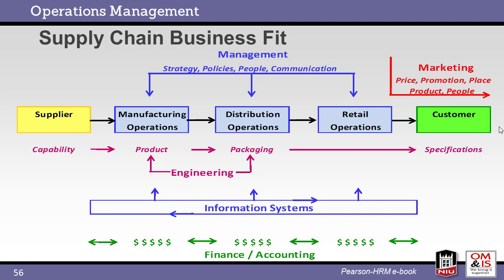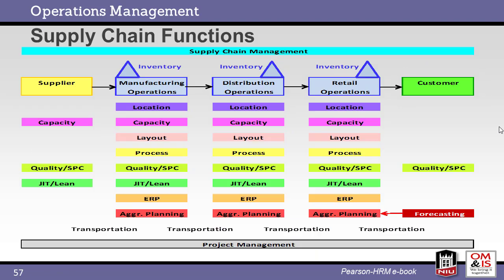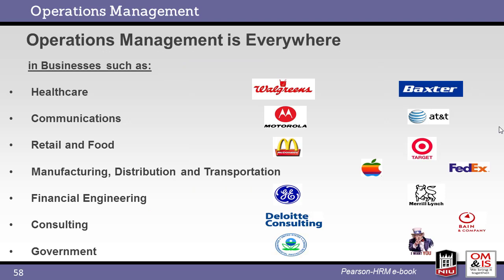Notice the flow of product from left to right along with information and finances traveling in both directions. Here we see a matrix of the different supply chain functions and how they relate to the different phases within the supply chain, from supplier to customer. Note the shared strategies, planning, transportation, and project management. Here are several companies actively using operations management to support their extensive and varied supply chain activities, noting the variety of companies providing both products and services.